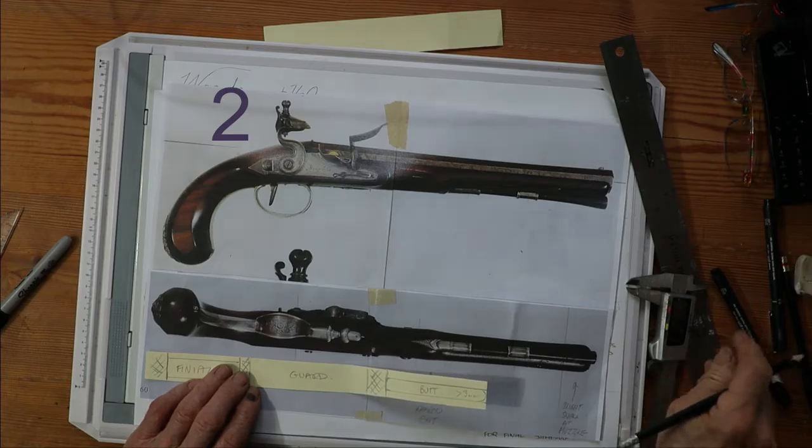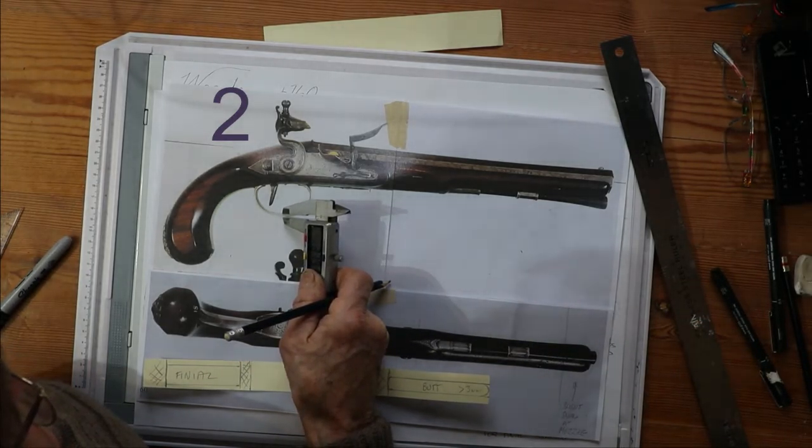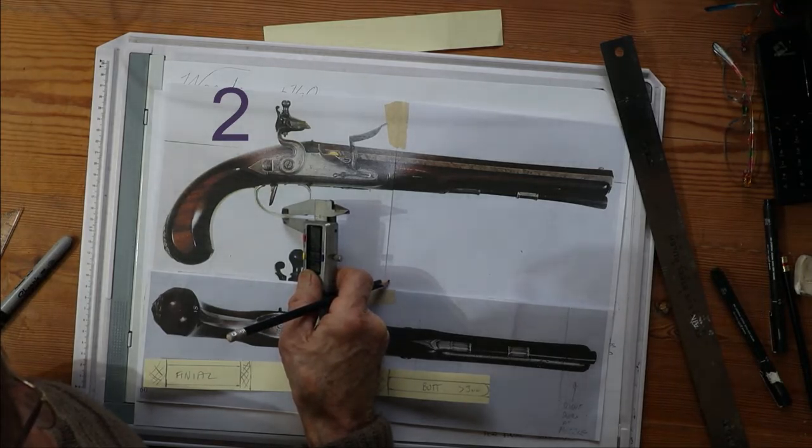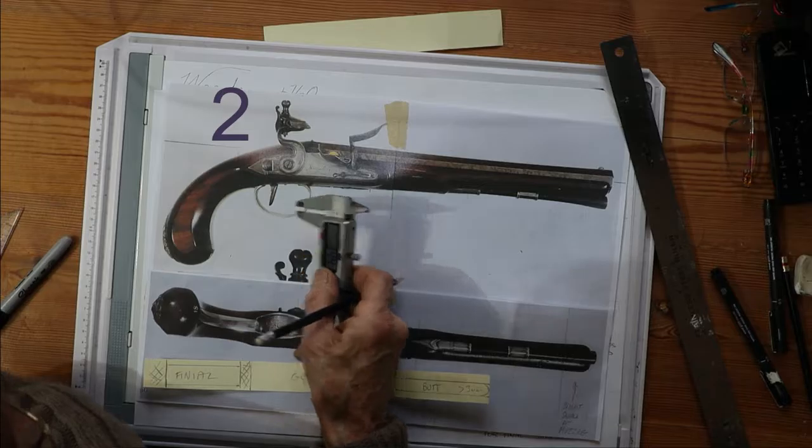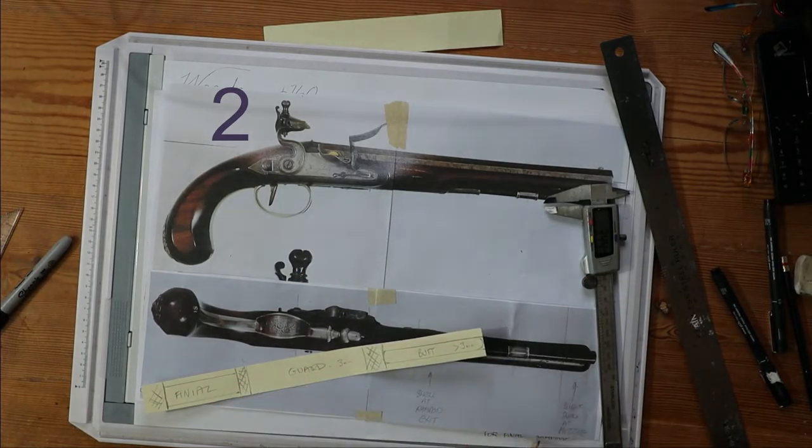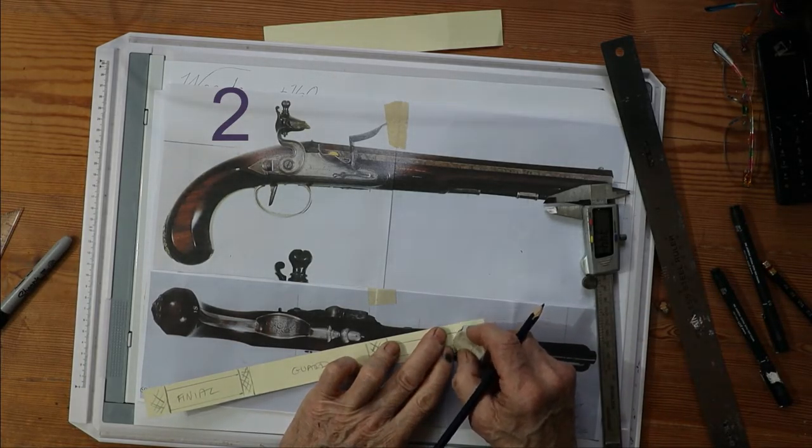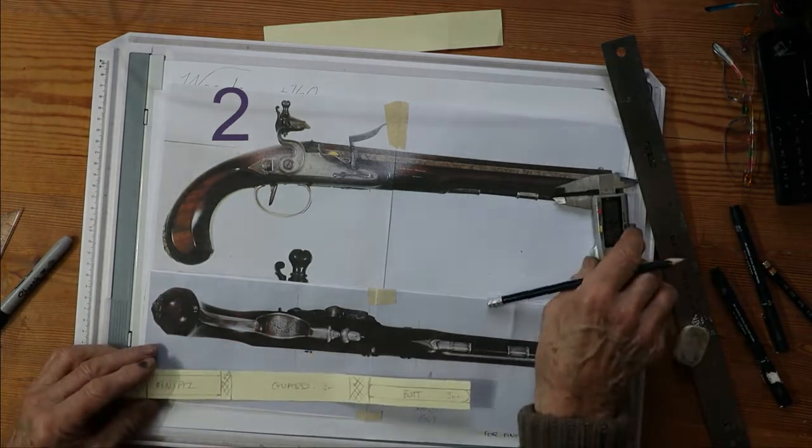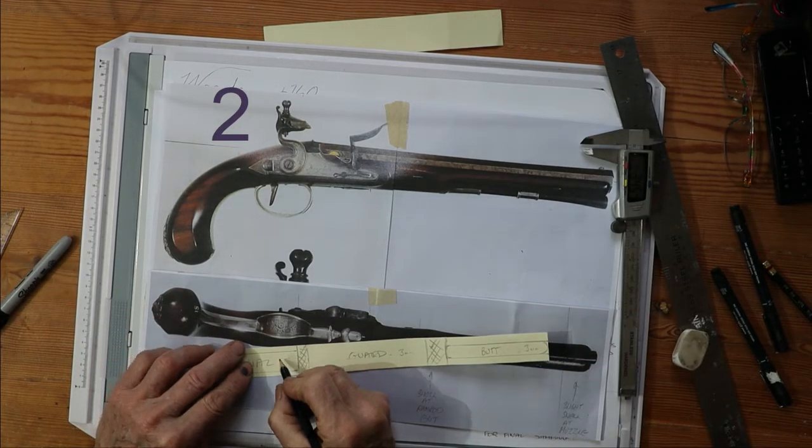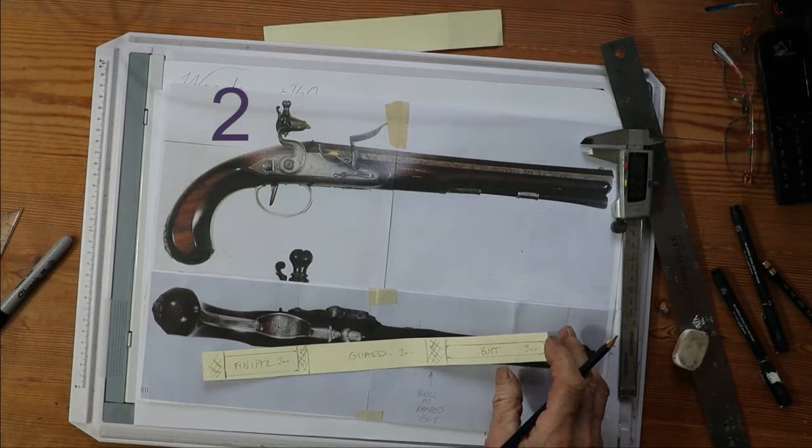And we may actually decide to hammer it into a slightly less than flat, put a curve on the back of it to save a bit of metal. So we'll say that it's going to be somewhat less than three millimeters. And the guard, now the guard, if I got it off the drawing, well, that's not going to be much less than three millimeters. So let's put down three millimeters for that.